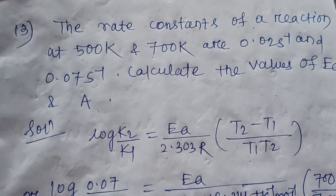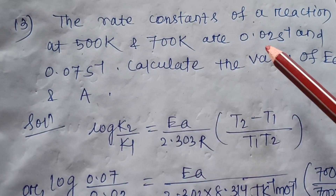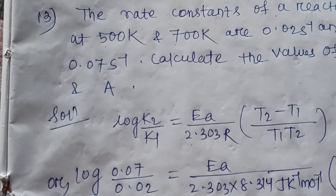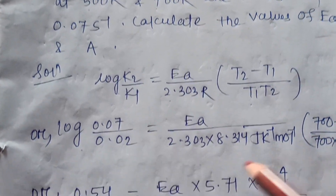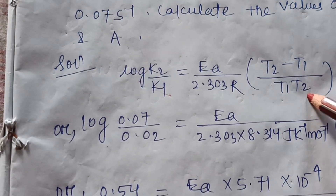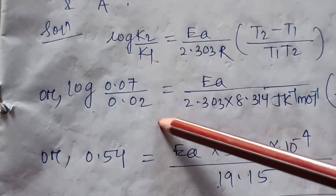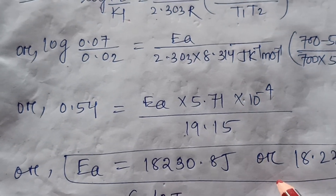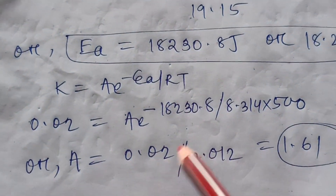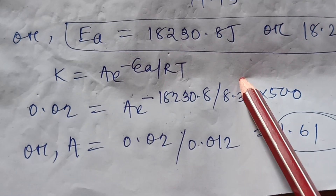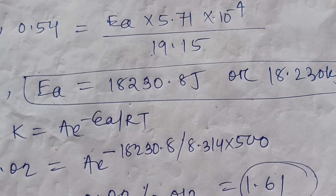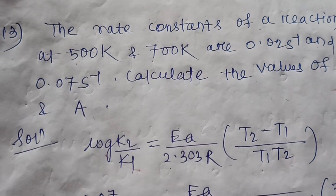Question number 14: the rate constants of a reaction at 500 K and 700 K are 0.02 s⁻¹ and 0.07 s⁻¹ respectively. Calculate the activation energy and pre-exponential factor. Using the formula: log(k2/k1) = (Ea / 2.303R) × (T2 - T1) / (T1 × T2). Substituting the values, the activation energy comes out to approximately 18 kilojoules.